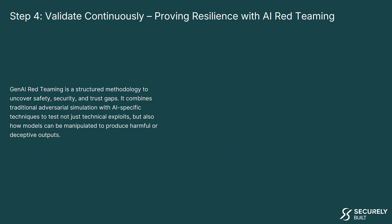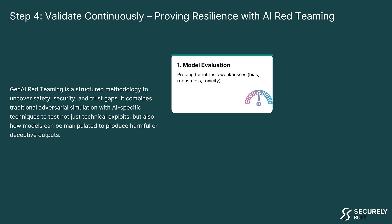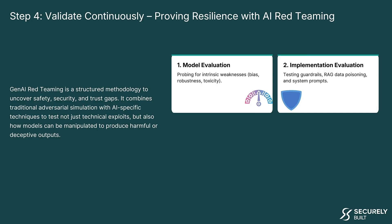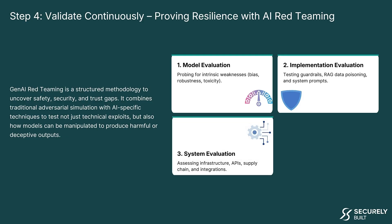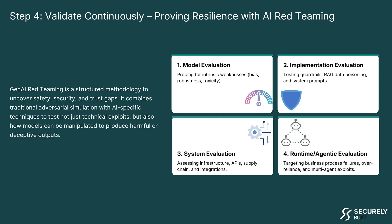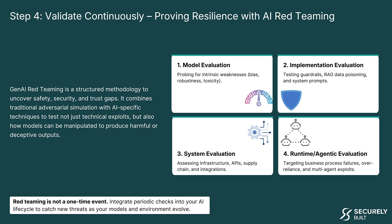Step four is to validate continuously through AI red teaming — a structured methodology to uncover safety, security, and trust gaps. It combines traditional adversarial simulation with AI-specific techniques to test not just technical exploits but also how models can be manipulated to produce harmful or deceptive outputs. Four types of evaluation: model evaluation, probing for bias, robustness, and toxicity; implementation evaluation, testing guardrails, RAG data poisoning, and system prompts; system evaluation, assessing infrastructure, APIs, supply chain, and integrations; and runtime or agentic evaluation, targeting business process failures, over-reliance, and multi-agent exploits. Red teaming is not a one-time event — integrate periodic checks into your AI lifecycle.